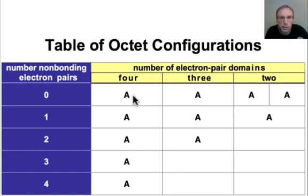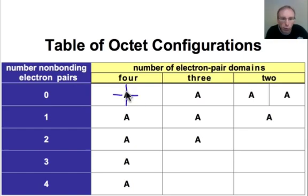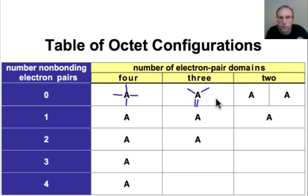A represents some generic atom. In the first row, we're going to write out all of the ways of making an octet around atom A without using any non-bonding pairs of electrons. With 4 electron pair domains, the way we get to an octet is with 4 single bond domains. If we have 3 domains, the way to get to an octet is with 1 double bond domain that has 4 electrons, and then 2 single bond domains with 2 electrons each.